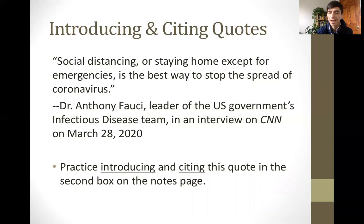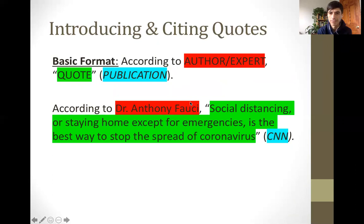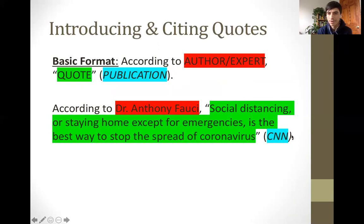Hopefully you've gotten a chance — let's go over that and correct what you've done or congratulate yourself on getting it right. Here's the basic format for including a quote and citing it that we've been practicing. According to — it's always going to start the same — and then the name of the person or expert you're writing about, put a comma, then the quote, and then after the quote in parentheses we put the publication, and then a period. For example: 'According to Dr. Anthony Fauci, "social distancing... is the best way to stop the spread of coronavirus" (CNN).'